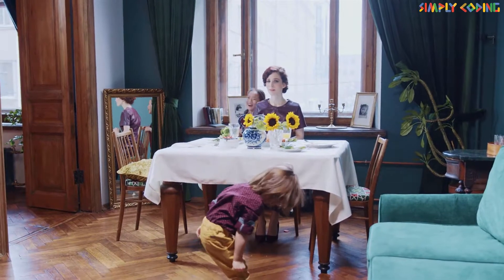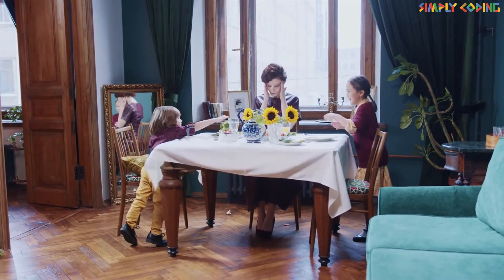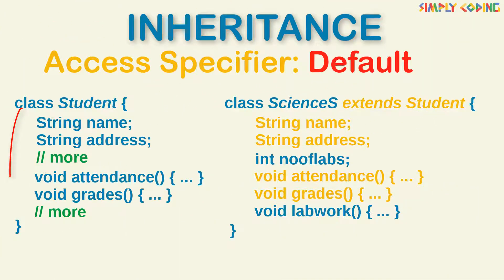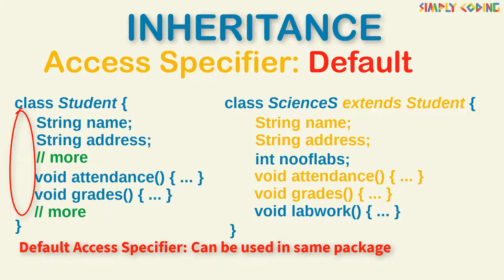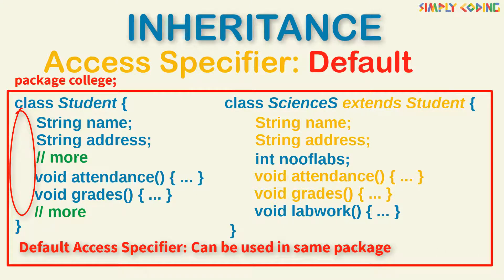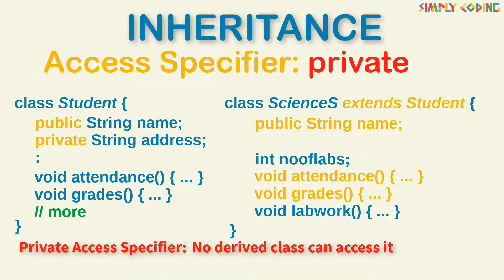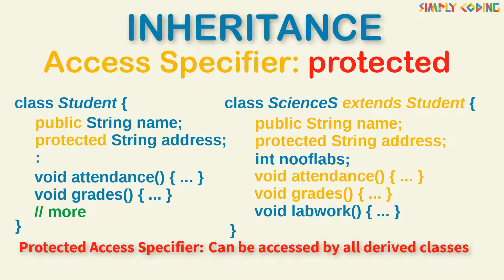Does it mean any child can inherit everything of the parent with no control? No. A parent can use access specifiers to control what a derived class can and cannot inherit. If members are declared without any access specifier (default), they can be used by derived classes in the same package only, and are not available to derived classes outside the package. If declared public, all derived classes as well as everybody can access them. If declared private, they cannot be accessed by the derived class. Members declared as protected can be accessed only by the derived classes.